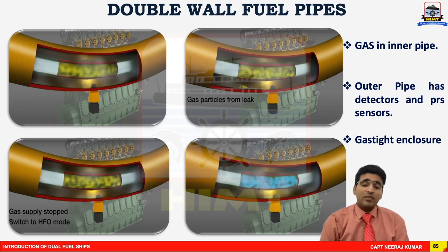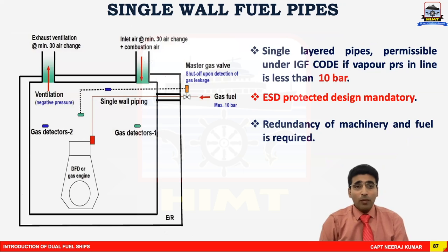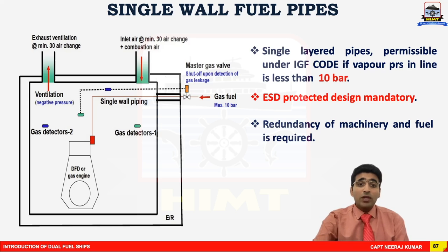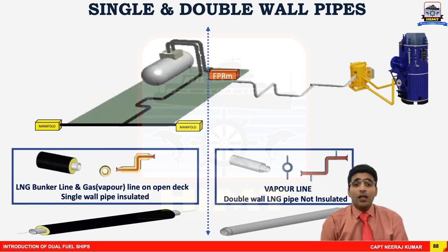This double wall arrangement is used as a common rail system for main and auxiliary engines. Under the IGF code, if pressure inside the pipe is less than 10 bar, single wall piping is permitted; however, additional requirements apply — the spaces must be ESD protected with redundancy of machineries and fuel supply. In terms of layout: piping from the manifold to the storage tank and from the storage tank to the fuel preparation room is single wall. From the fuel preparation room through the gas valve unit to the machineries, it is all double wall piping.